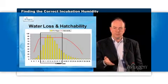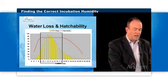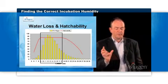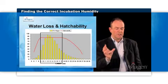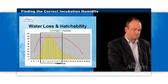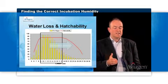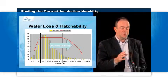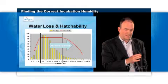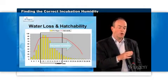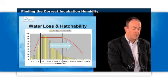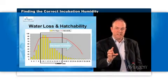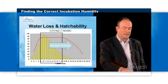This graph shows the normal distribution of water loss from individual eggs, and if we match that with the relationship with hatchability, what we're trying to do is get as many of the eggs into this ideal zone as possible, as shown by the black box. If the humidity is too high in the incubator, the water loss is lower and the distribution of eggs is shifted more to the left side of the graph, which results in poor hatchability due to too little water loss, with more eggs outside the ideal zone. So we need to decrease the incubator humidity to bring the eggs back into the ideal region.